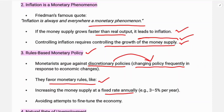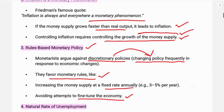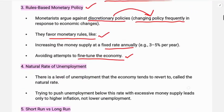The third feature is rule-based monetary policy. Monetarists advocate for a constant rate of money supply increase, avoiding attempts to fine-tune the economy. Rather than actively adjusting monetary policy, the money supply should be increased at a constant, steady rate to influence the economy consistently, unlike the classical approach.